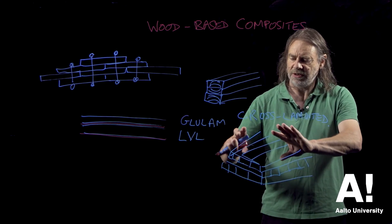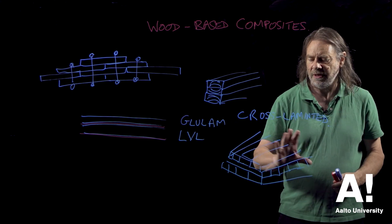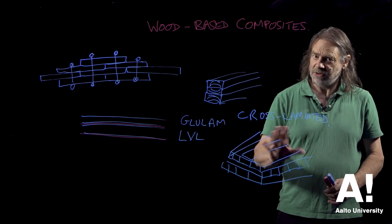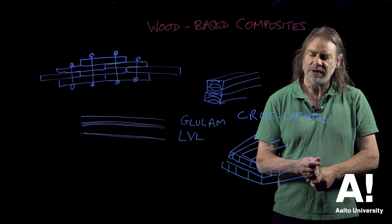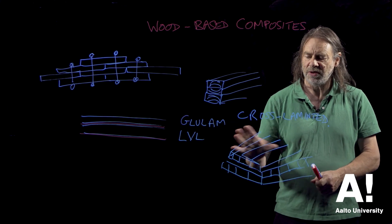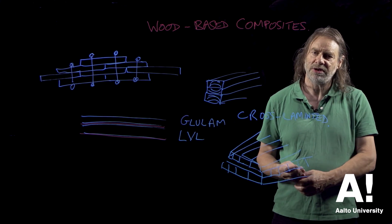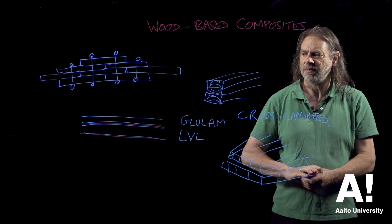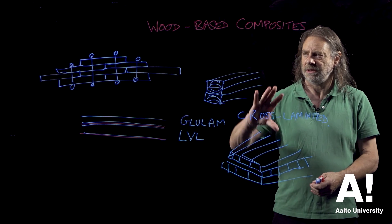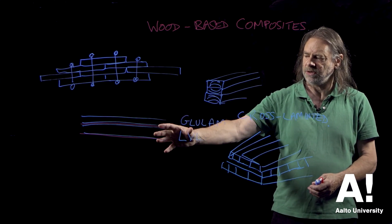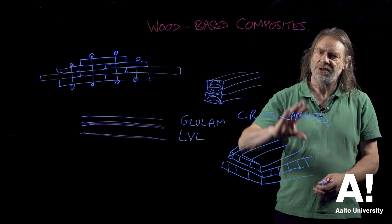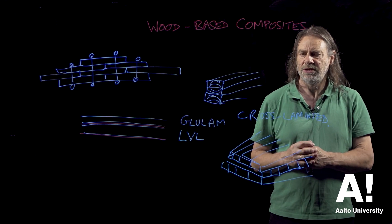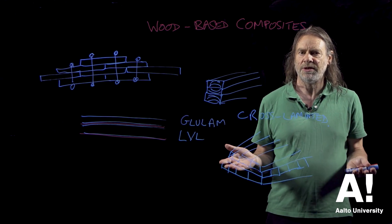These cross laminated structures are becoming extremely popular for making tall buildings out of wood — it's been quite a revolution in timber engineering, the introduction of cross laminated timber. So these are composites based on using large pieces of wood, but there are also composites produced using small pieces of wood.